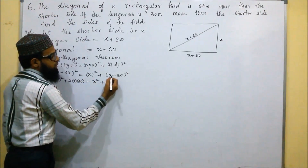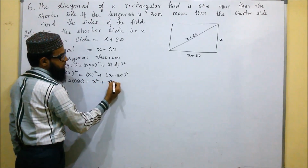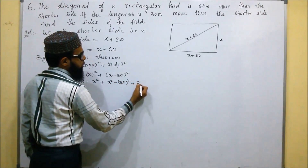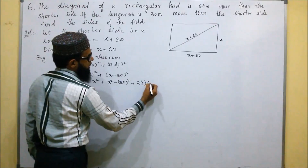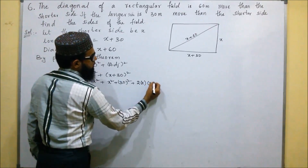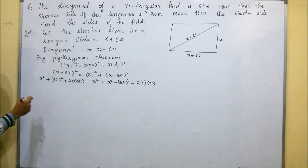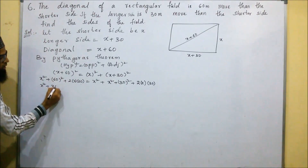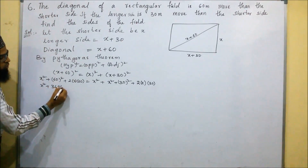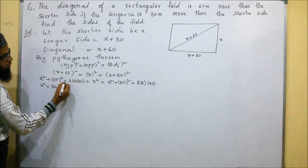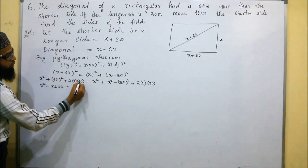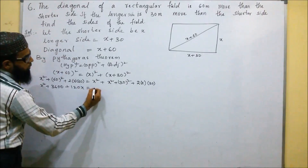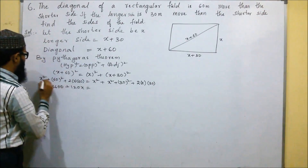Expanding using (a + b)² = a² + 2ab + b²: the left side gives x² + 2·x·60 + 60², which is x² + 120x + 3600. The right side gives x² plus x² + 2·x·30 + 30², which is x² + x² + 60x + 900.